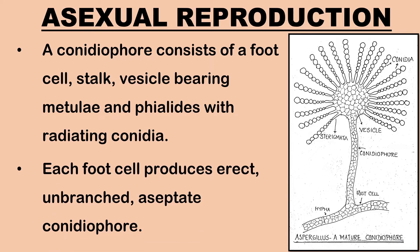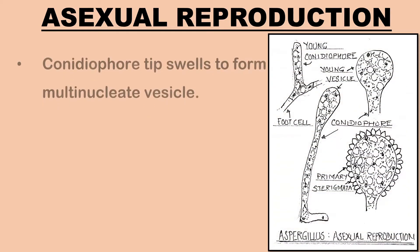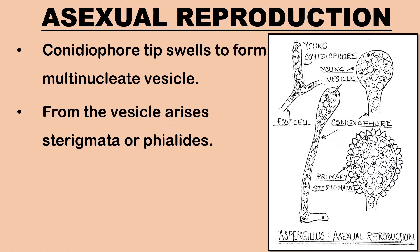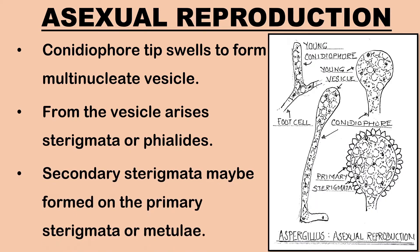Each foot cell is T-shaped and becomes thick-walled. It produces a special erect branch as an outgrowth known as the conidiophore, which is unbranched and aseptate. The tip of each conidiophore swells and forms a globose head called the vesicle, which is multinucleated and may contain several organelles. From the vesicle arise many radially arranged tubular outgrowths called sterigmata or phialides, which are compactly arranged and cover the entire surface of the vesicle. Sometimes secondary sterigmata may be formed on the upper side of primary sterigmata or metulae.